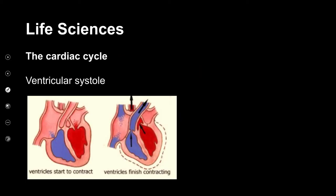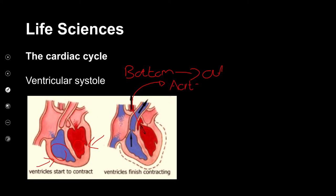Our next step is the blood in the bottom chambers — the ventricles — and it must go out. So how do I get it out? I squeeze the ventricles. When I squeeze the ventricles, the blood goes out of the heart. On the left-hand side, it's going to go to the aorta, all the way around the body. On the right-hand side, it's going to go to the lungs via the pulmonary artery. And again, there are valves that will open, and when the blood is finished they're going to close, and when it closes it again makes a sound.